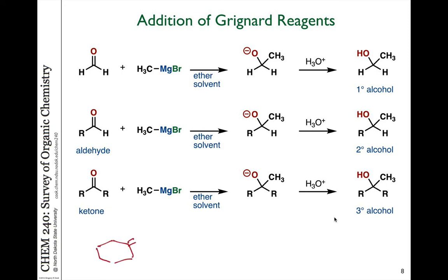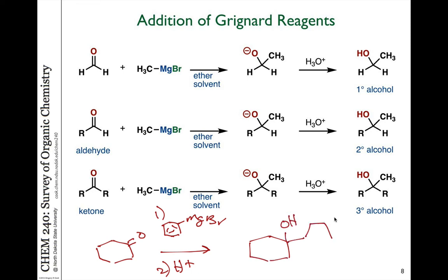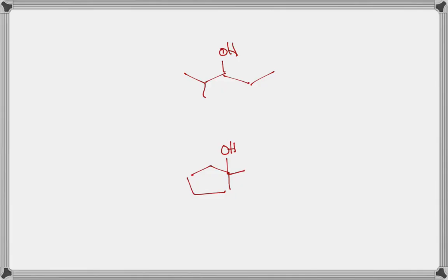This Grignard addition to aldehydes and ketones to make alcohols provides us with a lot of possibilities for synthesizing molecules. For example, if we take a ketone and add phenylmagnesium bromide as a first step, then add a source of acid in the second step, we end up with a new tertiary alcohol where we have added a benzene ring to make a larger molecule. This is great for synthetic strategy, and we can think about how to make alcohols by disconnecting — thinking backwards from the product — to the carbonyl compound.